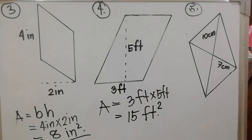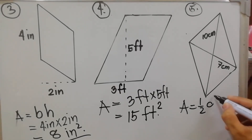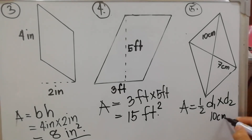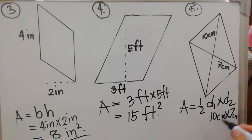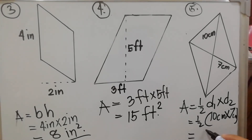For item number five, the given values are the diagonals. Using the formula A = ½ × first diagonal × second diagonal: first diagonal is 10 centimeters, second diagonal is 7 centimeters. So: 10 × 7 = 70, then 70 ÷ 2 = 35 square centimeters.